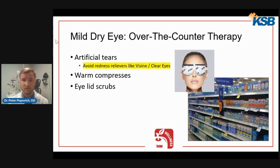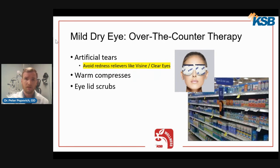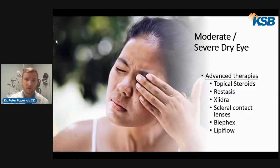There are also warm compresses, which can be a warm washcloth or a mask you can buy over the counter that retains heat on the eyelids, as well as eyelid scrubs. All these products help people with basic-level dry eye and hopefully make the eyes more comfortable.